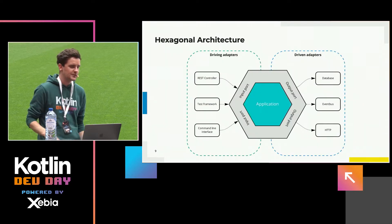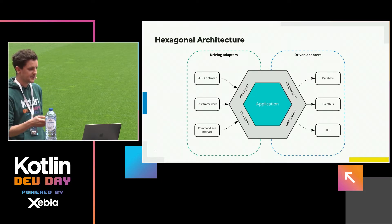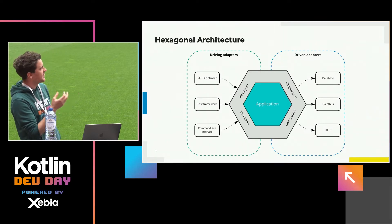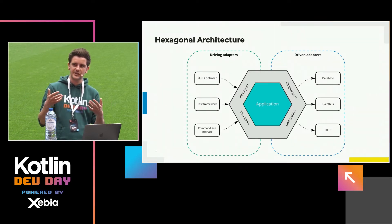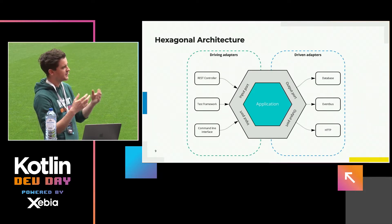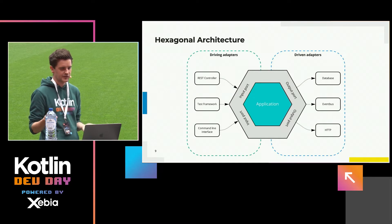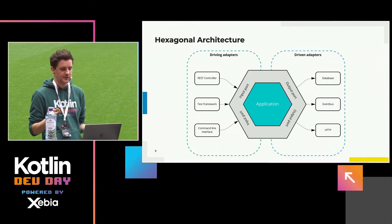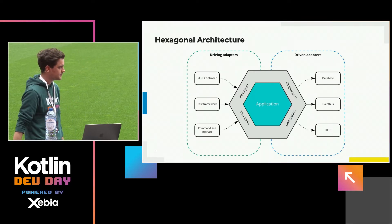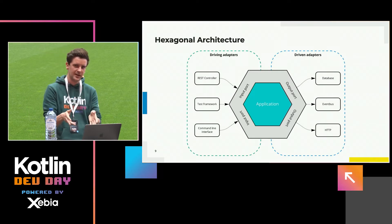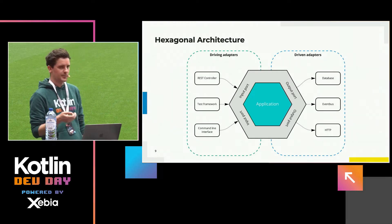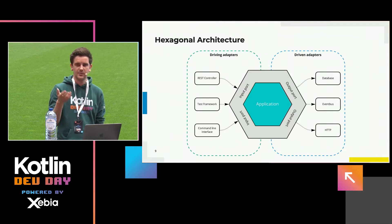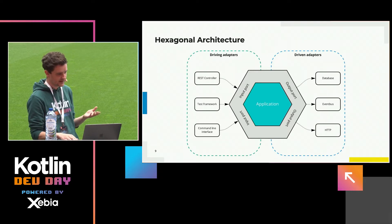Let's take a look at how we can fix this with hexagonal architecture. The basics are you divide the application into two parts — the inside of the hexagon and the outside. The inside is where your domain logic lives, the behavior of your system. The outside is where the infrastructure code lives, divided into two separate parts: the driving adapters and the driven adapters. A driving adapter calls your domain code so it can be executed — for example, a REST controller or a web application. A driven adapter, a classic example, is the database so your data can get stored.